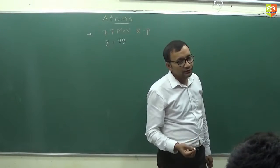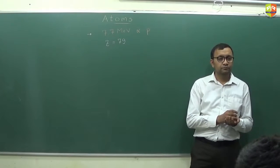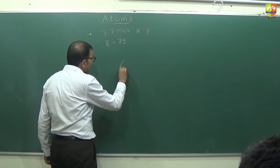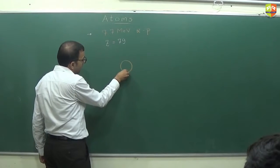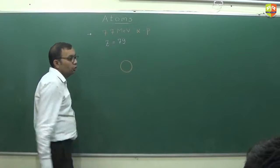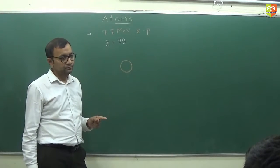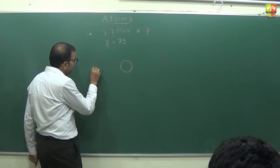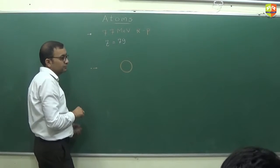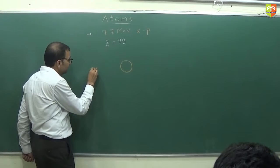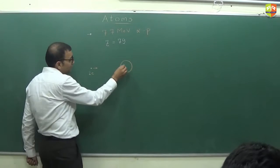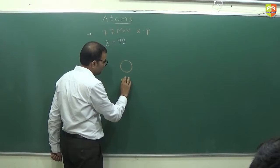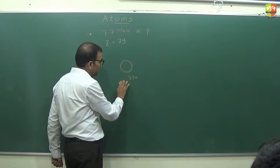The hint is you have to use conservation of energy. The closest approach happens when it is a head-on collision. If the alpha particle starts to move towards the nucleus, how much charge does it have? 2 times the charge of the electron. How much charge does the nucleus have? 79 times the charge of the electron — it has 79 protons in it.